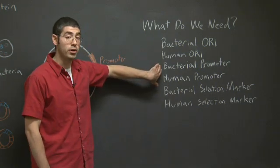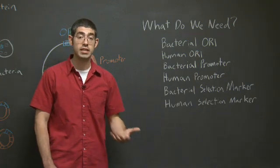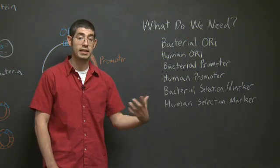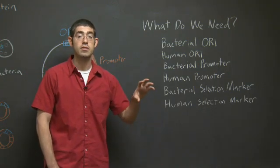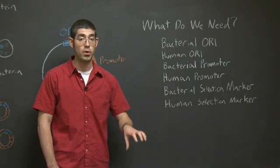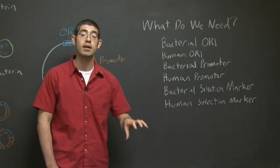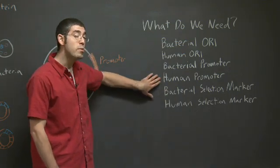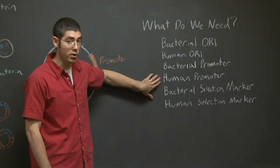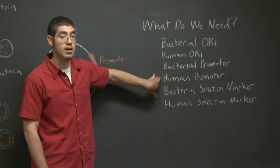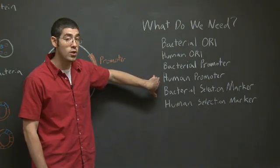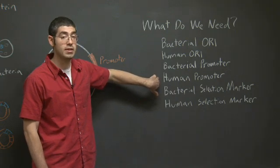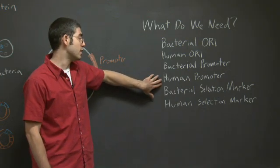What about bacterial promoter? Yes. Even though it's a human gene, the promoter has to be for the bacteria, because it's going to be the bacterial RNA polymerase that will bind to the promoter and ultimately make the mRNA from the cDNA. What about a human promoter? No, we don't need a human promoter, because the human RNA polymerase won't be involved. Again, this is only going to be in the bacterial cell. It's not going to be in the human cell, so it doesn't need the human promoter.